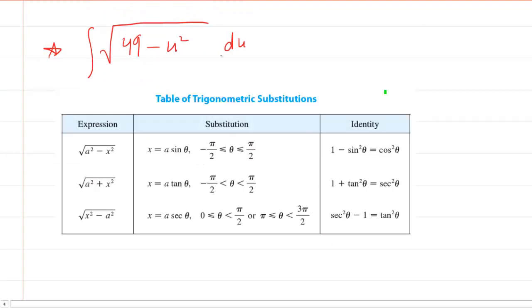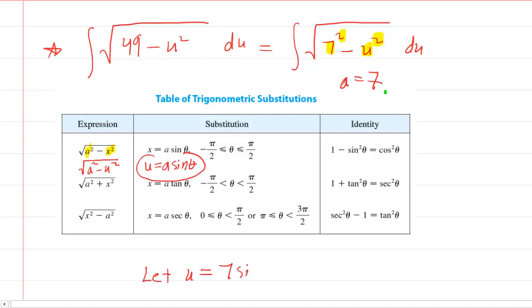Here is our handy table of trigonometric substitutions. If you look at our problem, we can re-express it as the square root of 7 squared minus u squared du, since 49 is a perfect square. That's strategic because we have a constant squared minus a variable squared. If you look at these three expressions, one of them also has a constant squared minus a variable squared. In their case, the variable is x rather than u, but it's the same idea. This is the square root of a squared minus u squared. The table tells us we have to make another substitution. Rather than x equals a sine theta, our variable is u, so we say u equals a sine theta. Our a value is 7 because we have 7 squared, so a equals 7. We're going to let u equal 7 sine theta.